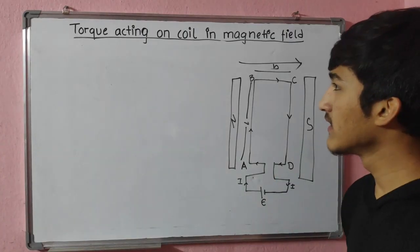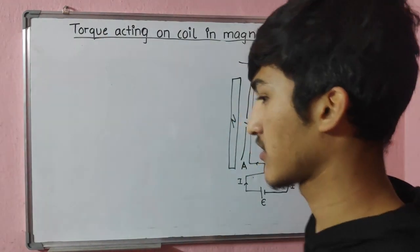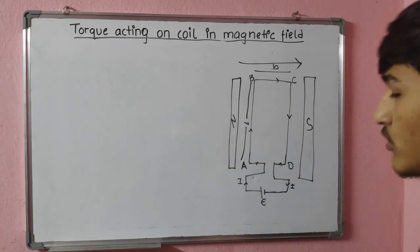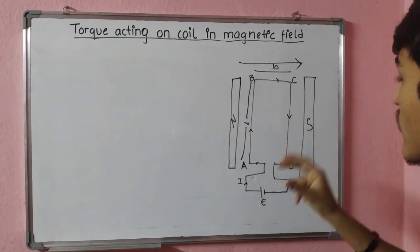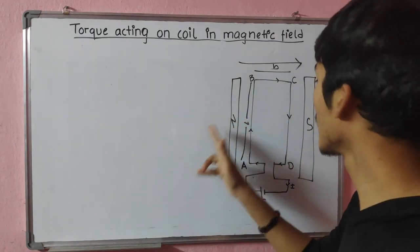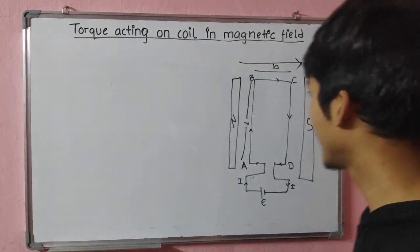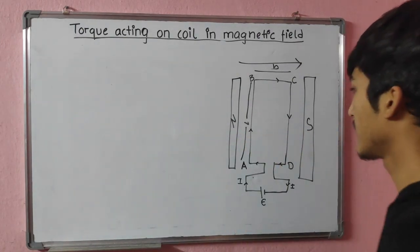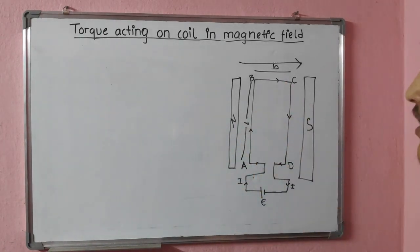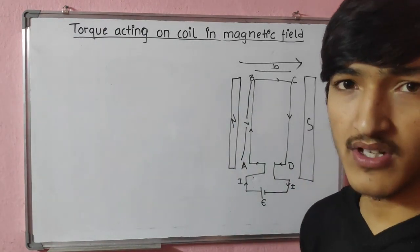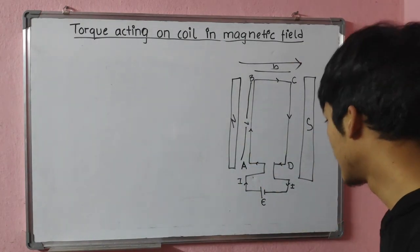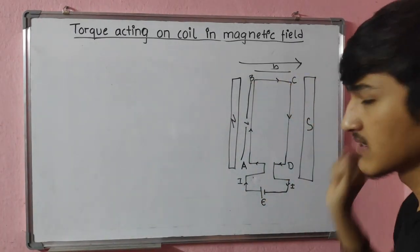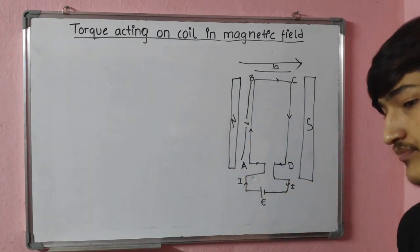Now let us see a configuration for deriving the expression of torque. We have one north pole and one south pole. The magnetic lines of force always emerge from the north pole and go to the south pole, so the direction of the magnetic field is from N to S. Between these two magnets, we have kept a rectangular strip ABCD. This coil has four arms — AB, BC, CD, and DA — where L is the length and B is the breadth.